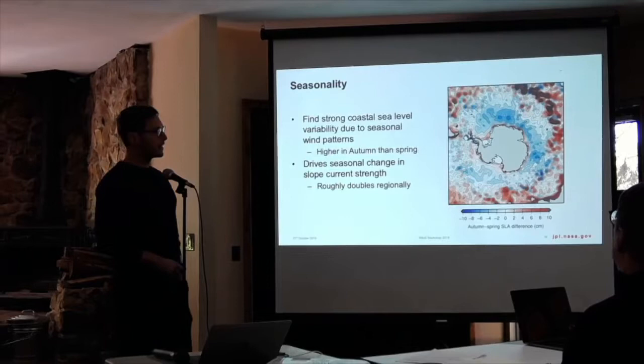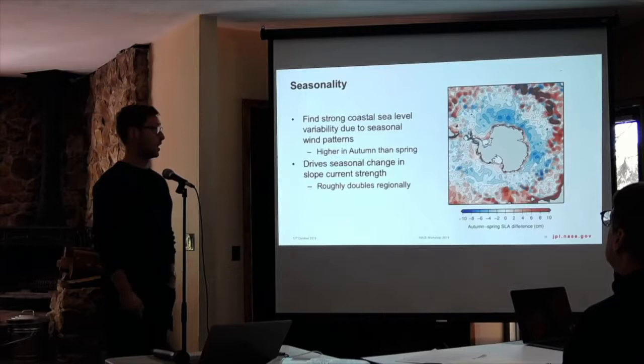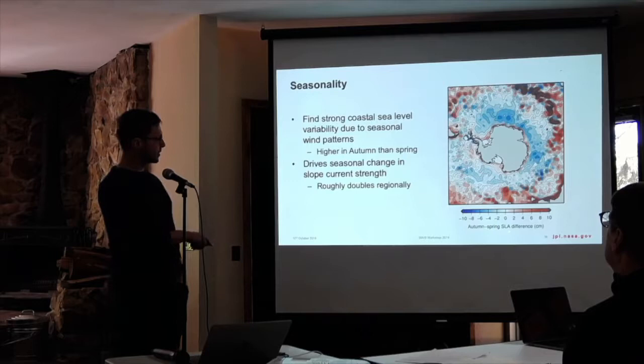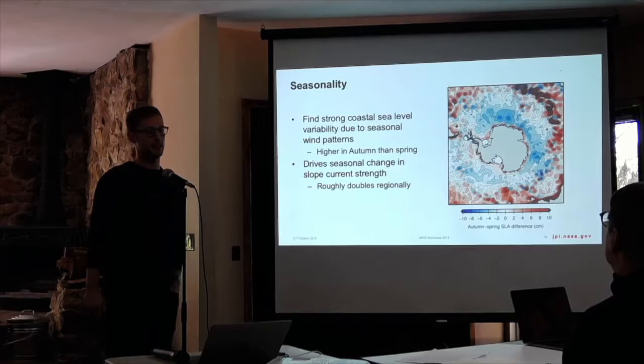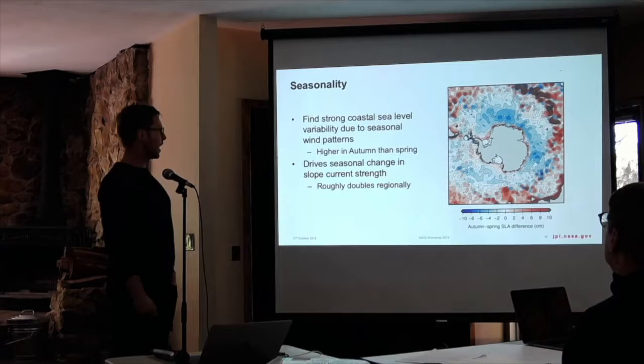There's a strong seasonality in the strength of the slope current along the shelf edge. This is the sea level anomaly difference between autumn and spring. Basically in autumn, the sea level is much higher on the continental shelf and it seesaws across the shelf break. That drives a seasonality in the strength of the slope current, which can be regionally up to twice as fast in the autumn, especially in regions of East Antarctica.